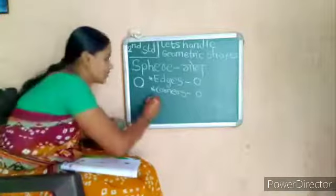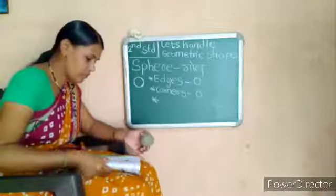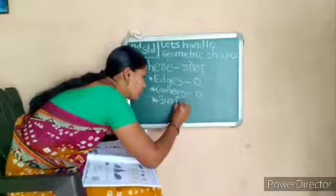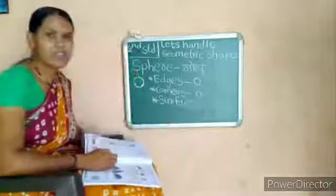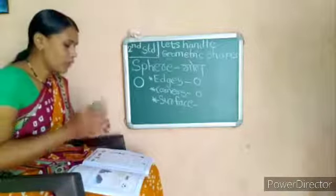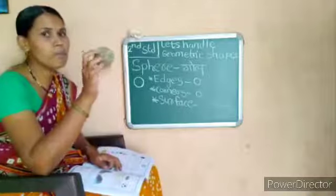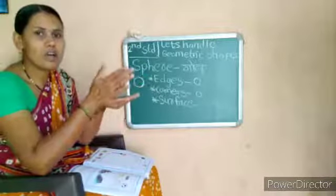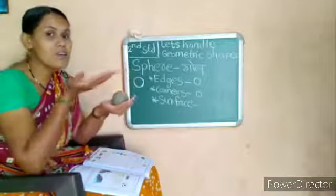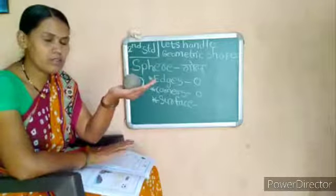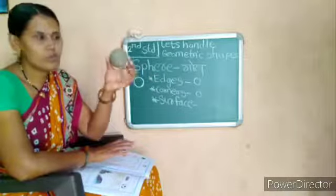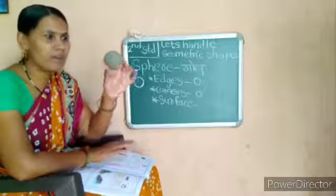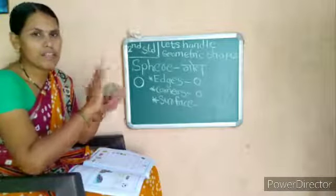Now our third point is surface, or faces. No part of a sphere is flat. No part of a sphere is flat. Tumhala kutha flat surface disto ka? Flat means sapat — is any part flat? No. There is no any flat surface, no any flat part here.